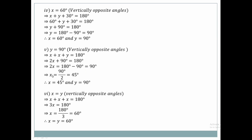Number 6: X is Y by vertically opposite angles. So X plus X plus X equals 180 degrees. Then 3X equals 180 degrees, therefore X is equal to 60 degrees.